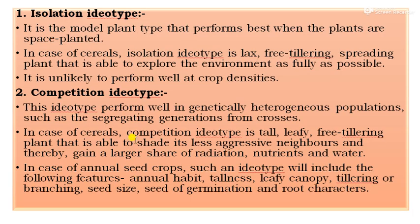The first type is isolation ideotype. This is the plant type model that performs best when plants are space-planted — that is, according to spacing, planting of the crops is done to evaluate performance. In the case of cereals, the isolation ideotype is a lax, pre-tillering, spreading plant that is able to explore the environment as fully as possible. It is unlikely to perform well at high crop densities. Spacing is very important to evaluate the specific performance of the model plant type.